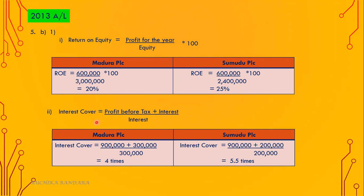Second ratio: interest cover equals profit before tax plus interest divided by interest. For Maduro PLC, profit before tax is 900,000 plus interest of 300,000, divided by 300 — 4 times. For Sumudhu PLC, same profit before tax of 900,000 plus interest of 200,000, divided by 200,000 — it's 5.5 times.